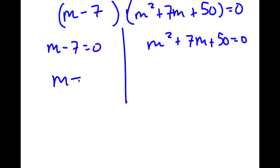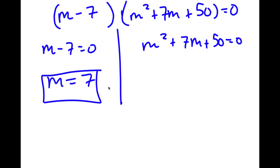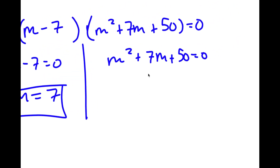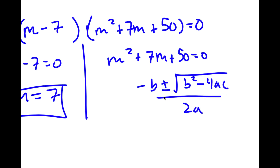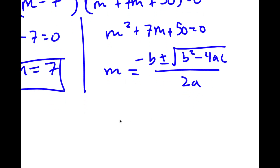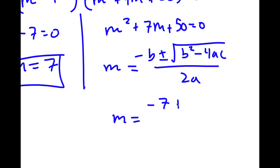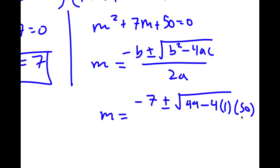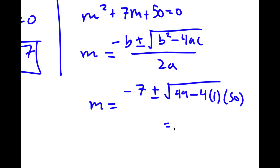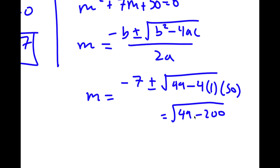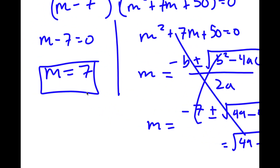From m - 7 = 0, I get m = 7, which is one solution. For m² + 7m + 50 = 0, I use the quadratic formula: (-b ± √(b² - 4ac)) / 2a. This gives (-7 ± √(49 - 200)) / 2. Since 49 - 200 is negative, this has no real solutions. So the only solution is m = 7.